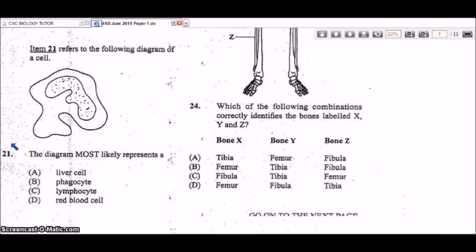Item 21 refers to a diagram of a cell. The diagram most likely represents a phagocyte, recognizable by its irregular shape and lobed nucleus. Phagocytes engulf pathogens when they enter the blood.